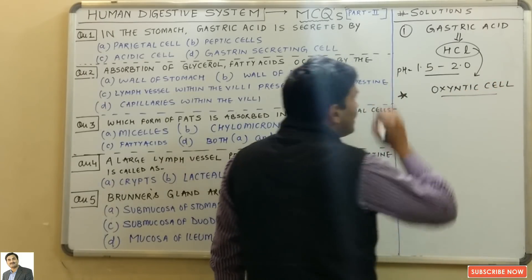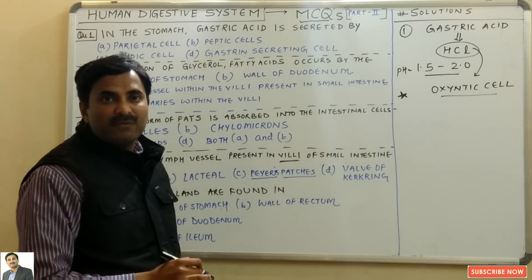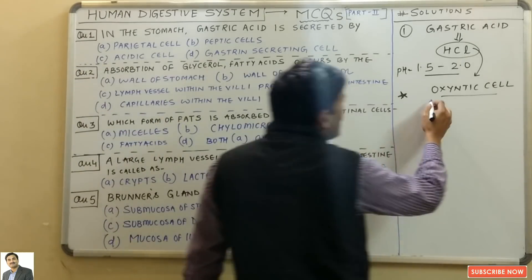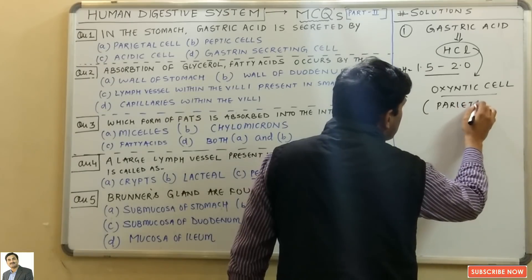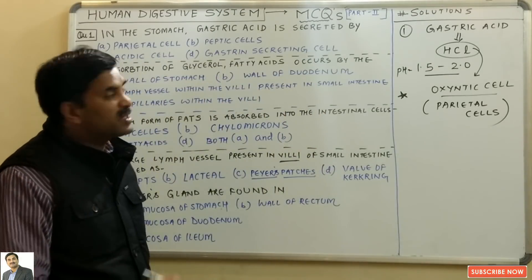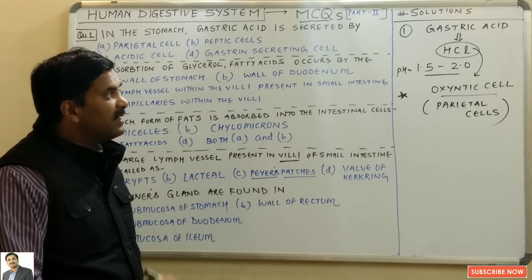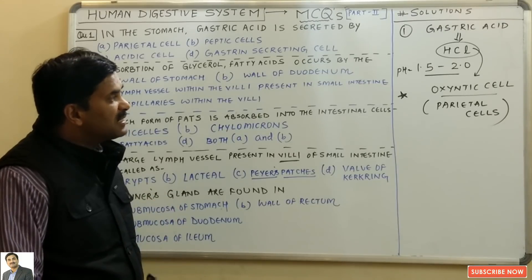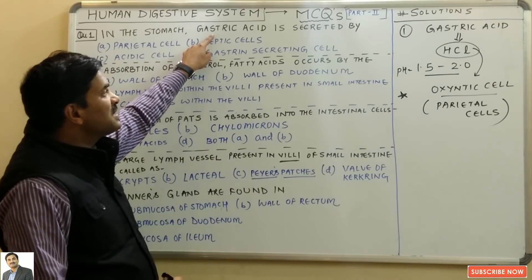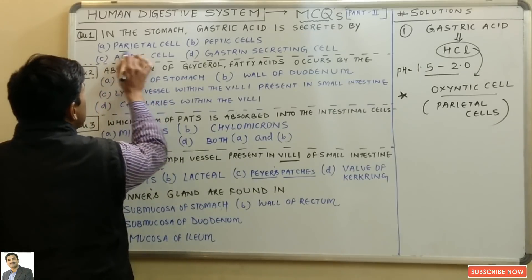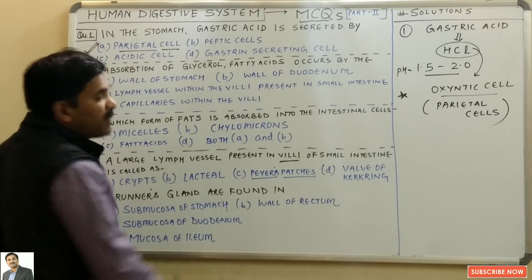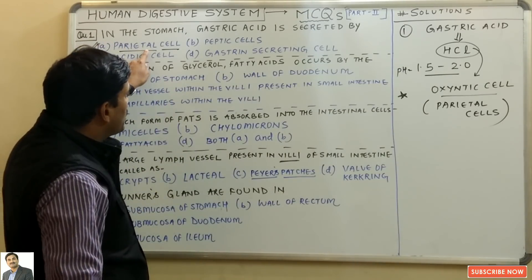A commonly asked question is: who secretes HCl in the stomach? The answer is oxyntic cells. These oxyntic cells are also named parietal cells. So the cells which secrete gastric acid (HCl) in the stomach are the oxyntic cells or parietal cells. Option A — parietal cells — is correct.